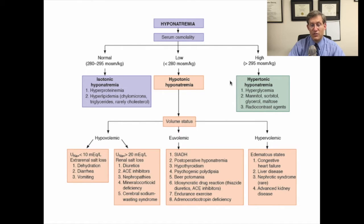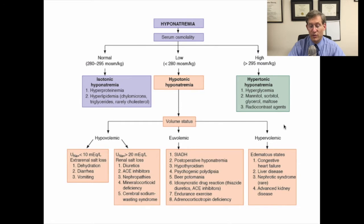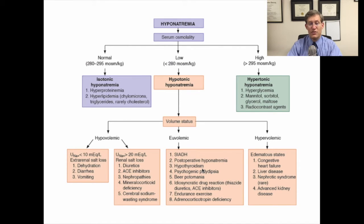Once you've done the initial determination of which category of hyponatremia the patient has, then you need to make a clinical determination of their volume status. As you can see here, the patients can fall into three categories: hypovolemic, euvolemic, and hypervolemic. Many patients that you will run into will have this classic category of euvolemic hypotonic hyponatremia. These are some of the most important clinical entities that you can manage, including the syndrome of inappropriate antidiuretic hormone, hypothyroidism, and adrenal insufficiency.